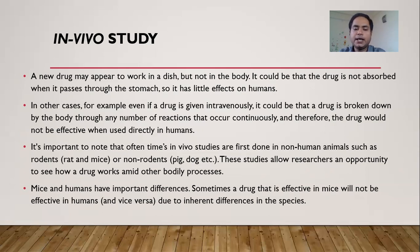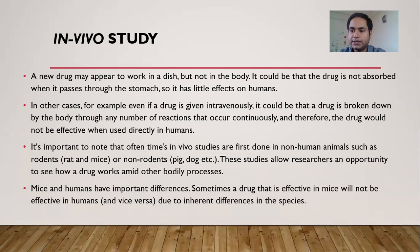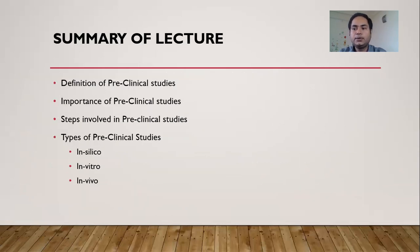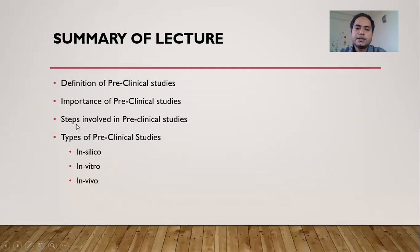Mice and humans have important differences; sometimes a drug effective in mice will not be effective in humans due to inherent species differences. In today's lecture, we discussed the definition of pre-clinical study, the importance of pre-clinical study, the steps involved in pre-clinical study, and the types of pre-clinical study: in silico, in vitro, and in vivo.